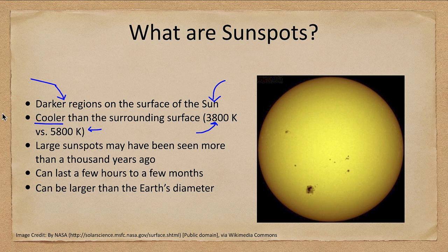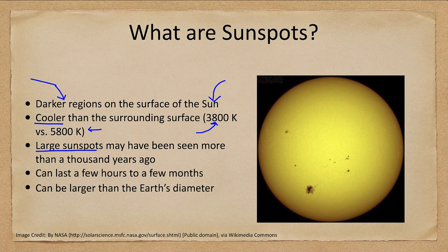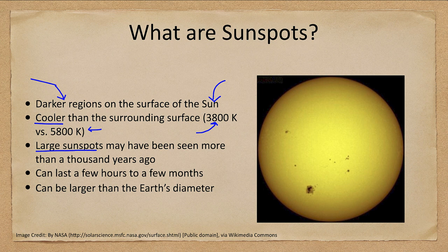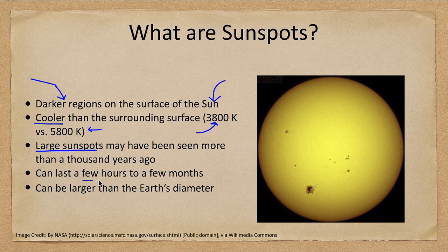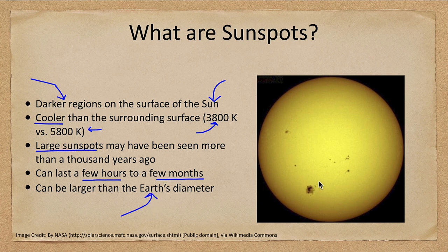It's quite possible that large sunspots may have been seen more than a thousand years ago, as it's possible to sometimes see them at sunrise or sunset when we're looking through a lot of atmosphere. However, the first recordings of them are from Galileo in the early 1600s. They last from a few hours to a few months and can be larger than Earth.